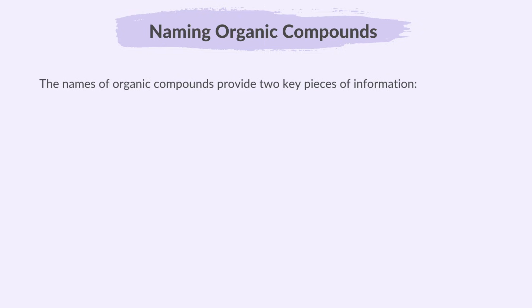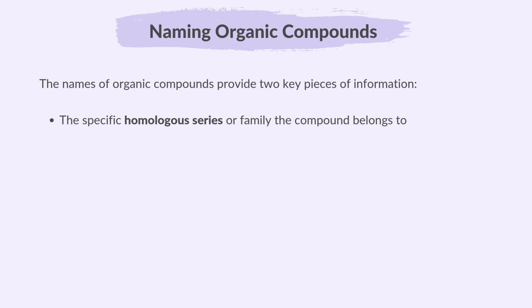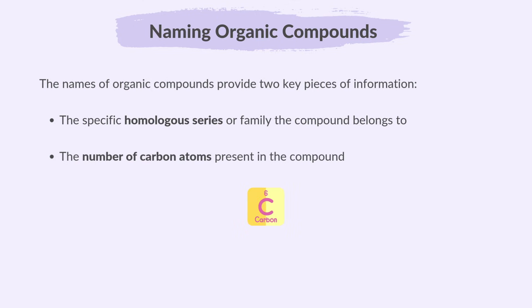The names of organic compounds provide two key pieces of information: the specific homologous series or family the compound belongs to, and the number of carbon atoms present in the compound.